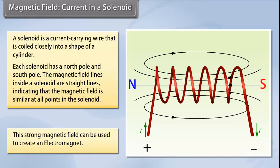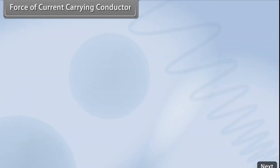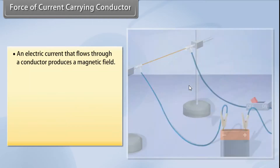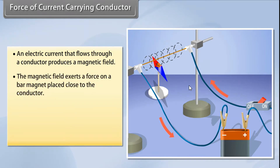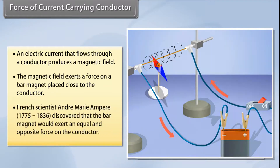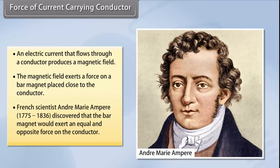This strong magnetic field in a solenoid can be used to magnetize magnetic materials. This type of magnet is called an electromagnet. We have seen that an electric current flowing through a conductor produces a magnetic field. French scientist André-Marie Ampère (1775–1836) discovered that a bar magnet placed close to the conductor would exert an equal and opposite force on the conductor.